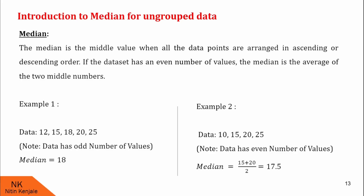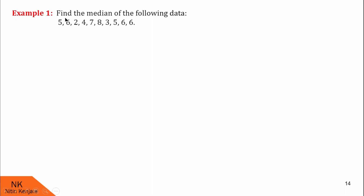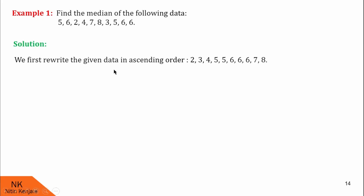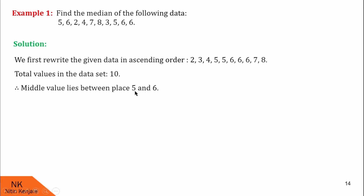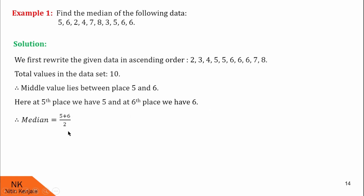Now let us see more examples. In example number one, we are asked to find the median of the following data. Note that this data is not arranged in ascending or descending order, so in the first step we will arrange it in ascending order. After rewriting the data in ascending order, the total number of values in this data set are 10 — an even number. Therefore the median will lie between positions 5 and 6. At fifth place we have value 5 and at sixth place we have value 6. Therefore the average is 5 plus 6 by 2, which is 5.5. Therefore the median is 5.5.